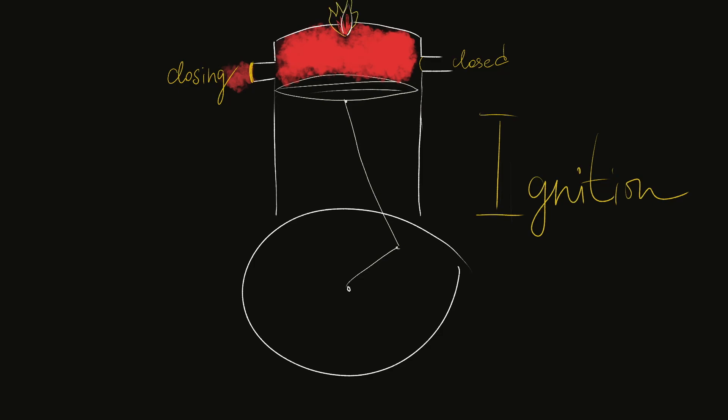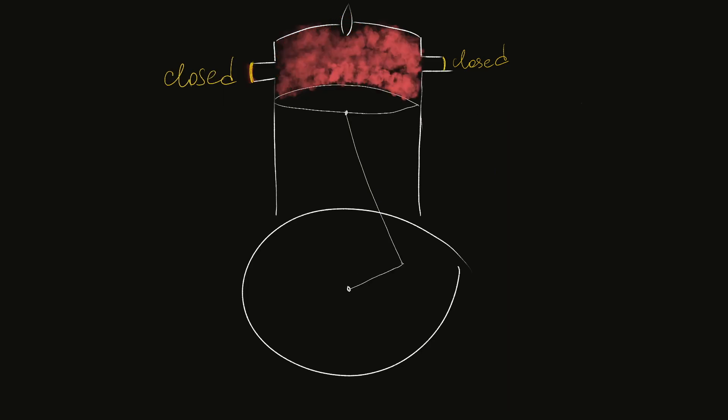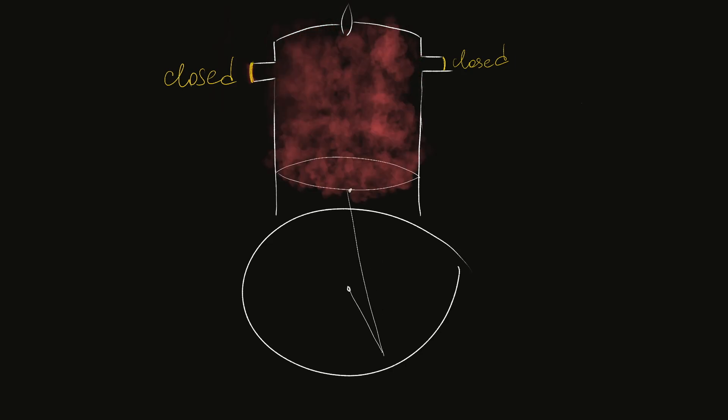During the ignition, the spark from the spark plug further expands the working mixture, increasing the pressure to 30 atmospheres and the temperature to 2500 degrees Celsius. This heated working mixture again moves the piston down, performing work. And this is called the power stroke. All valves are closed during this stage. And at the end of the power stroke, the temperature dropped to 1400 degrees and pressure drops to six atmospheres.